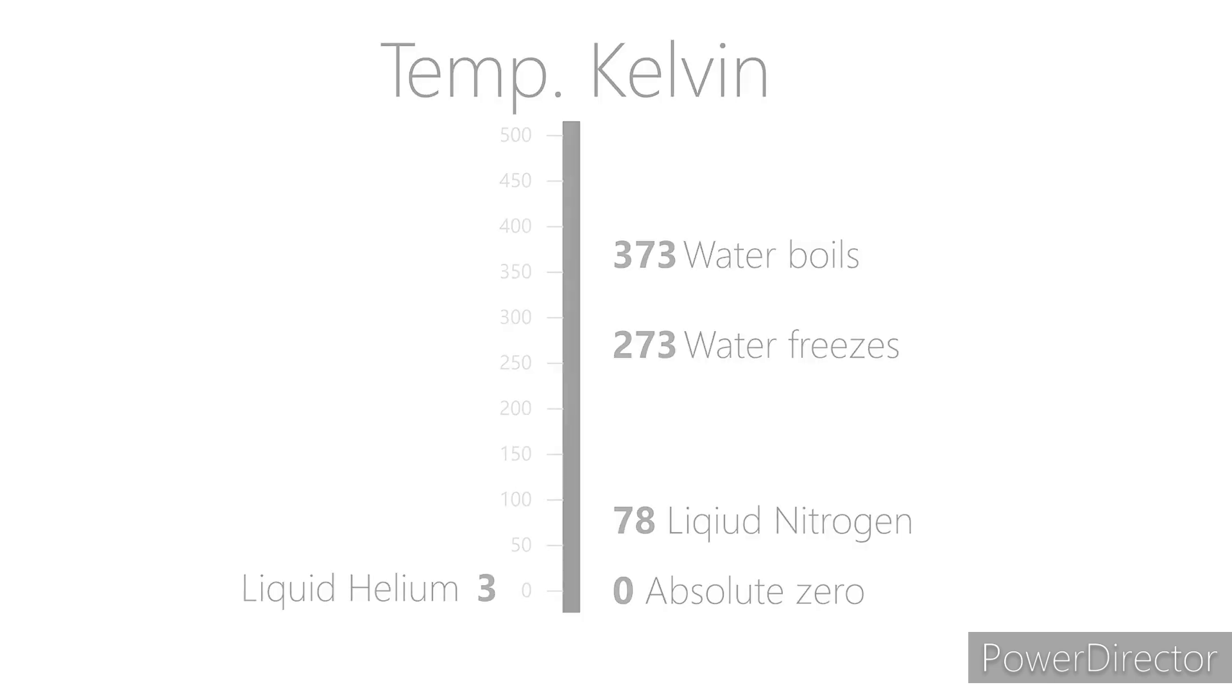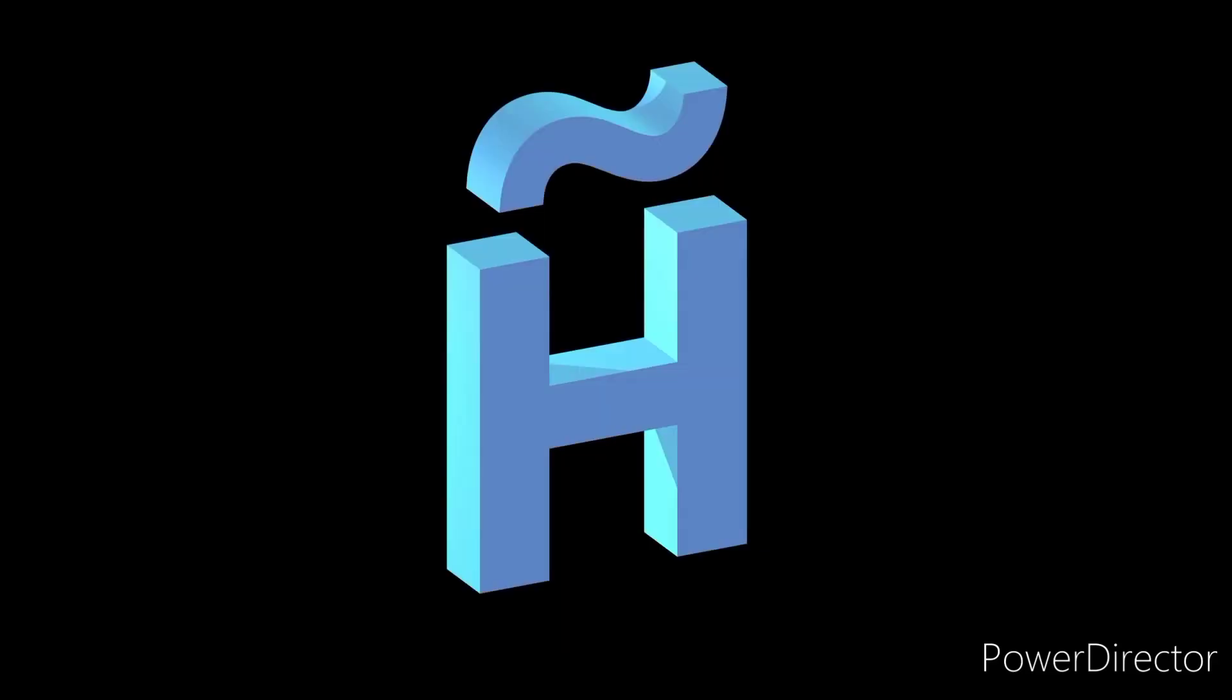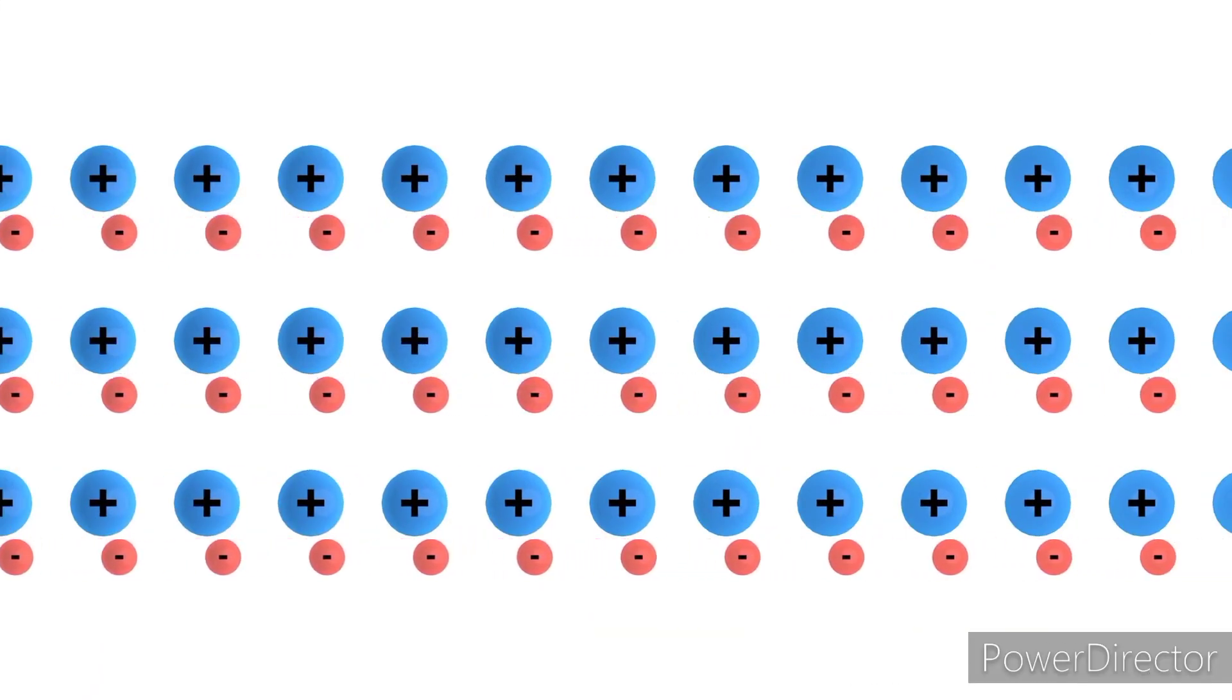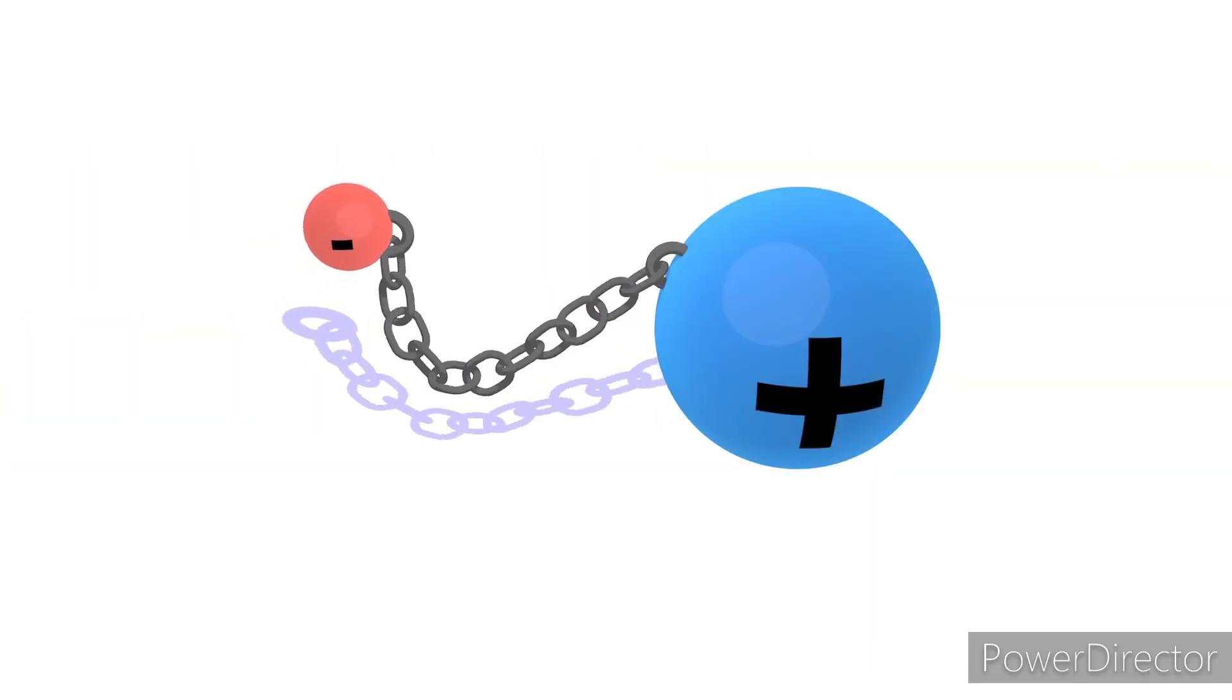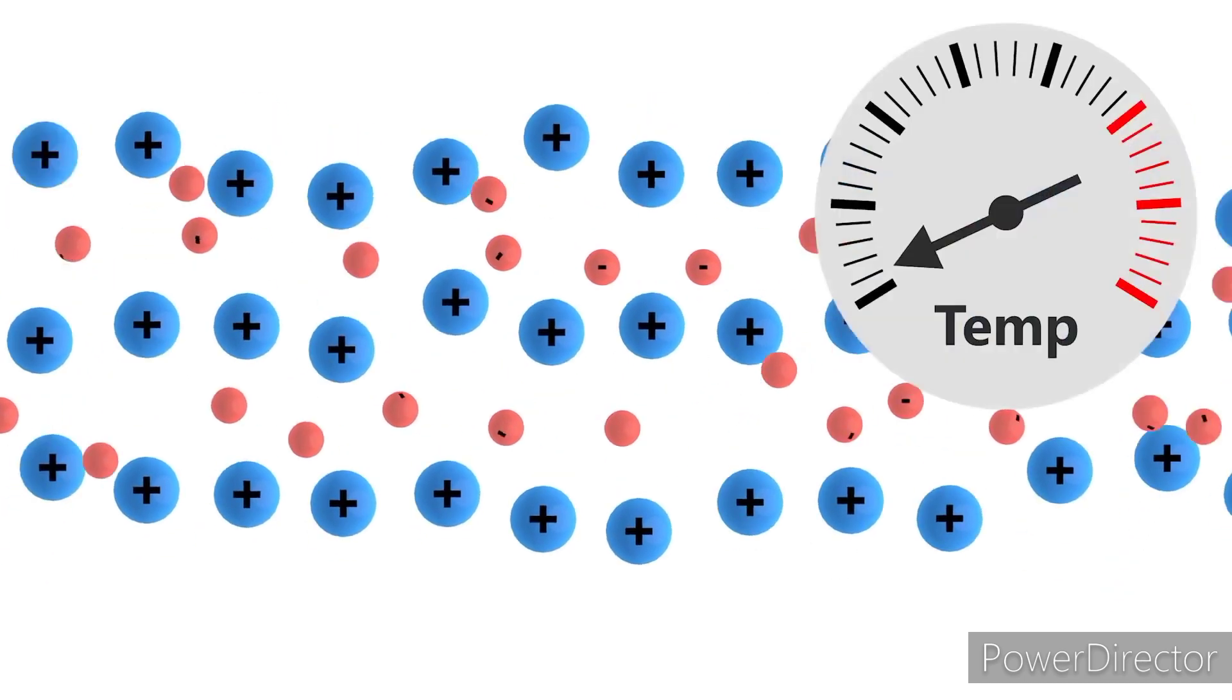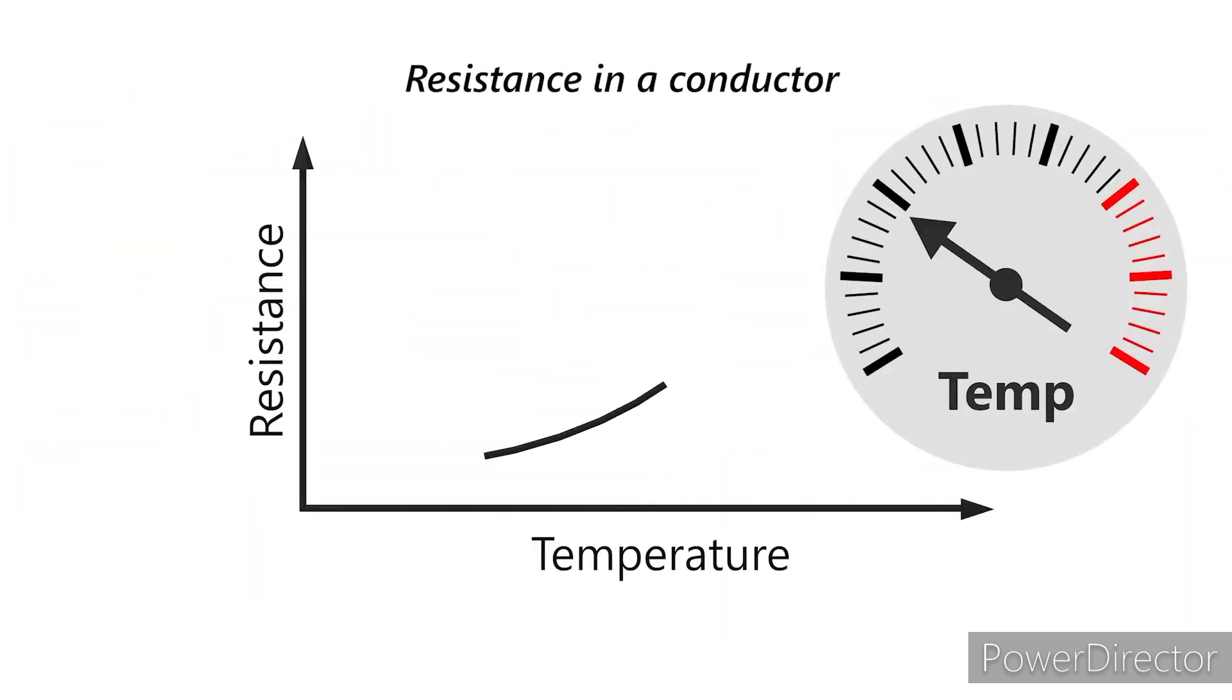Actually, all materials conduct electricity under the right conditions, but some conduct more easily than others. When we say a metal conducts electricity well, we really mean it offers little or no resistance when you try to make a current flow through it. At the same time, when we say plastic insulates well, we're actually saying that they put up high resistance to electric current.